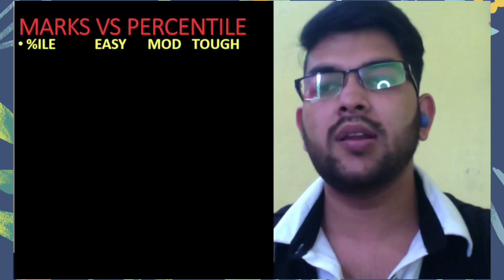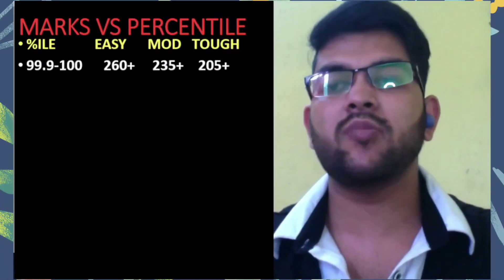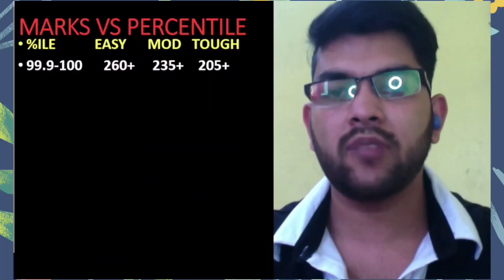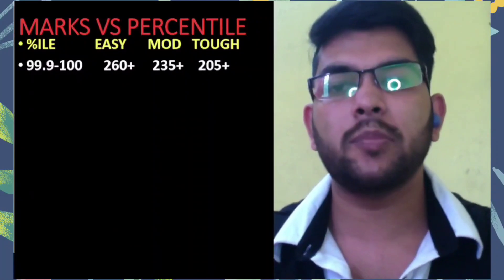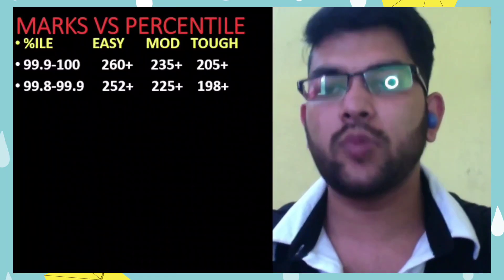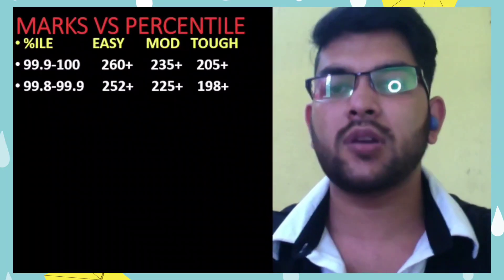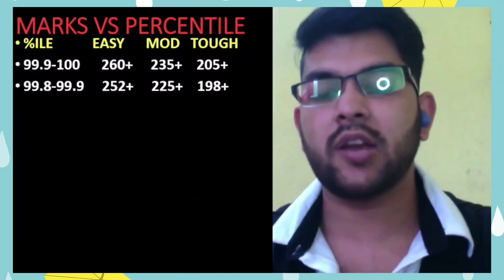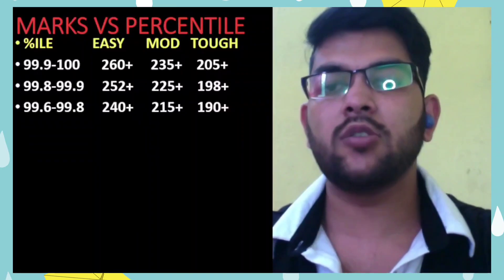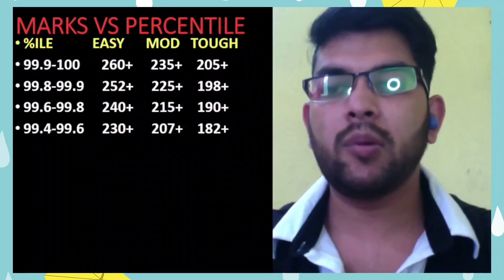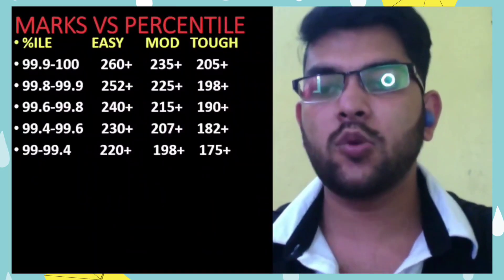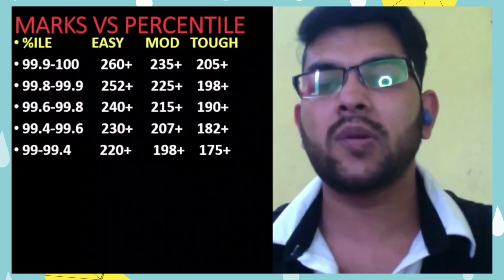For marks versus percentile, here are the details. For 99.9+ percentile, you need 260+ marks for easy paper, 235+ for moderate, and 205+ for tough paper. For 99.8 to 99 percentile, you need 252+ for easy, 225+ for moderate, 198+ for tough. For 99.6 to 99.8 percentile, marks will be 215+. For 99.4 and above, marks will be 207+. For 99+ percentile, marks will be 198 for moderate, 220+ for easy, and 170–175 for tough paper.